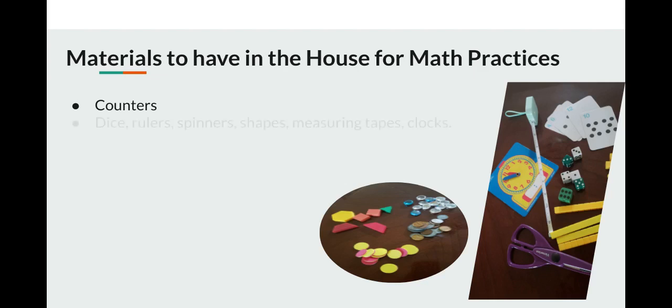It's a good idea to have dice, rulers, spinners, shapes (could be 3D or 2D shapes), measuring tapes and clocks in the house because you can build concept on concept. Once your child is competent with counting numbers, you can do other activities based on these. Dry erase boards are always a good idea to have around because you can erase them and reuse them. Have a stack of dry erase markers and erasers in the house.